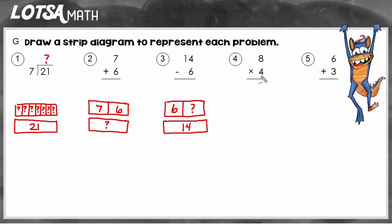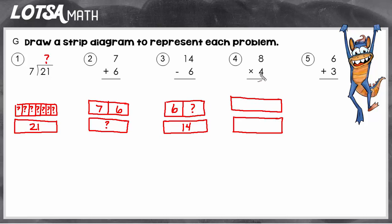So let's look at a multiplication strip diagram. With multiplication, we have the whole, and then we'll have the strip that represents the parts. Just like in addition, the product is the whole. With multiplication, there's going to be a lot of parts usually, because multiplication is repeated addition. In this case, we're going to add the number 8 four times, so I'm going to make four spots and label each one with 8.